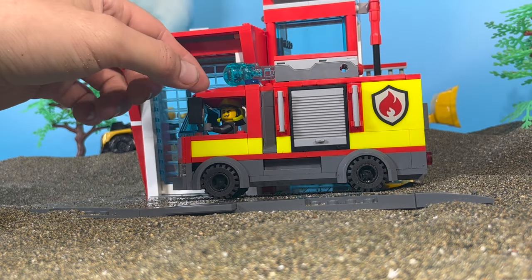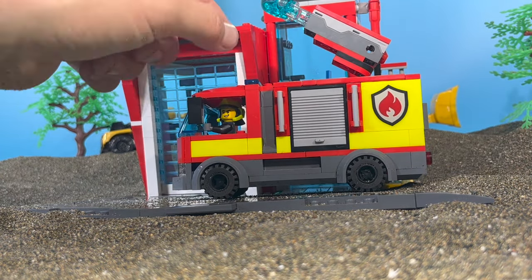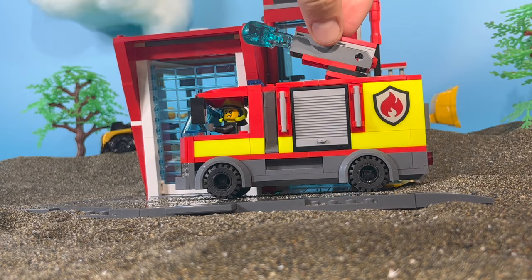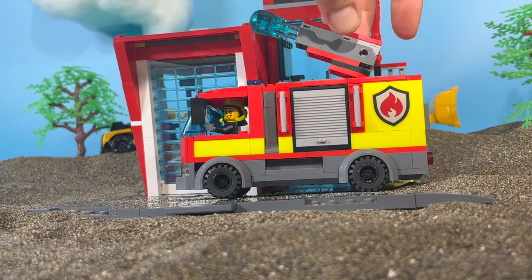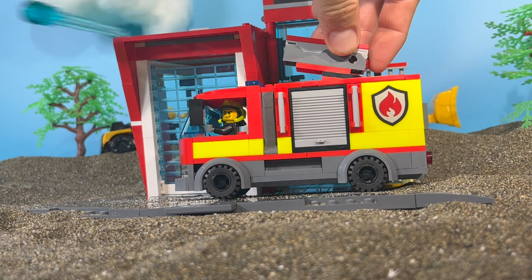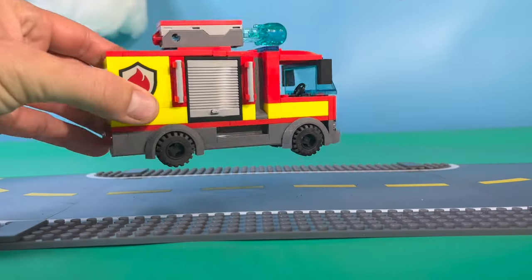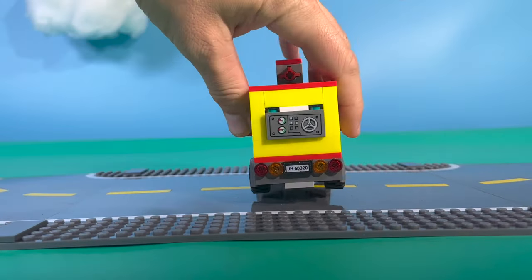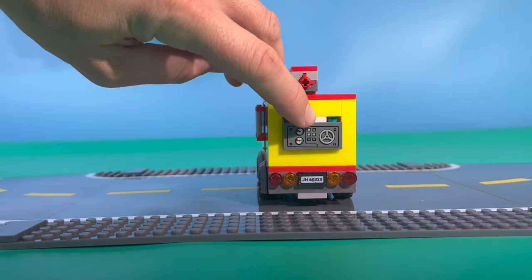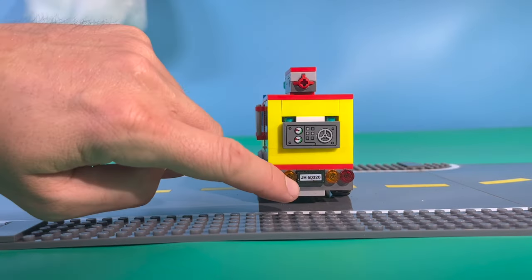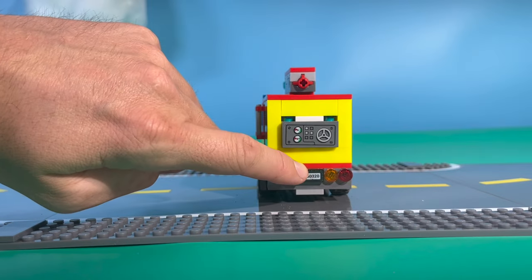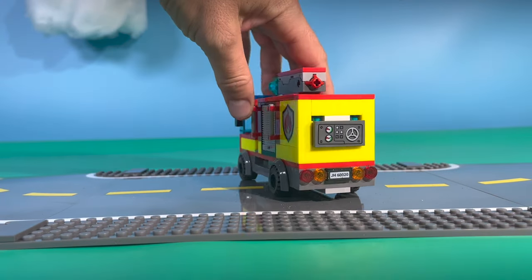The water cannon! Flip this truck around. Oh, it's got a little control panel on the back. Looks like it's got some sort of wheel. License plate, tail lights. Awesome!